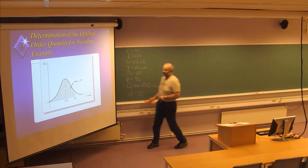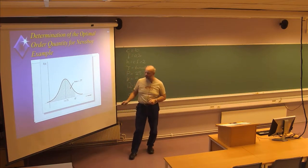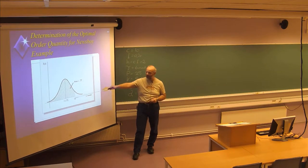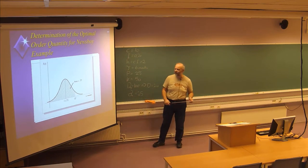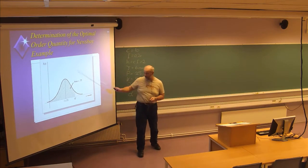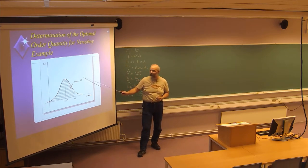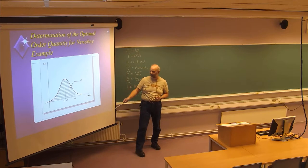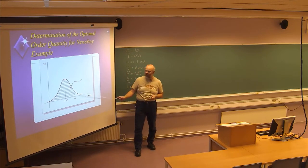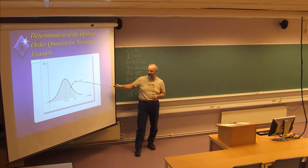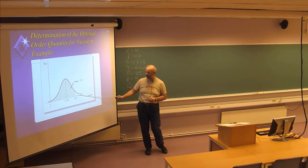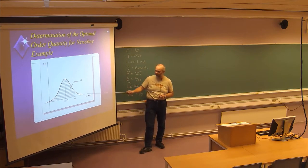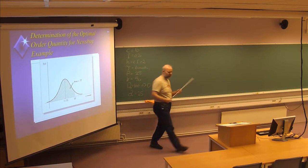We can also look at this graphically with a normal distribution curve. In the example from the textbook, the average or expected demand is 11.73 products. We also found that the critical ratio was 77%, meaning you must decide an order quantity Q that will meet demand in 77% of situations. The white area below the curve on the left represents 23% of the total area, which is also the probability of getting a stock-out.